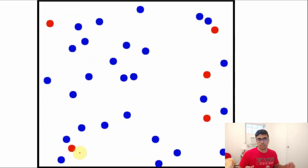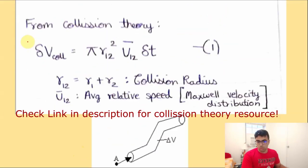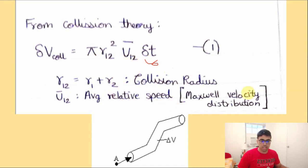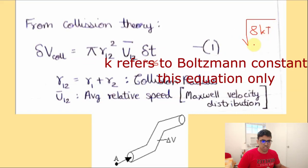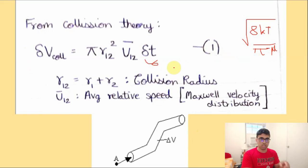For simplicity, let's consider molecules S1 and S2 as hard spheres of radii r1 and r2 respectively. From collision theory, the relative volume swept by S1 is given by π(r1+r2)² times the average relative speed ū times Δt — this is Equation 1. The average relative speed ū can be obtained from the Maxwell velocity distribution; I believe it's √(8kT/πμ).